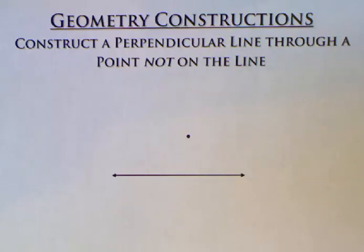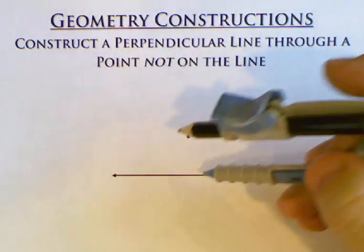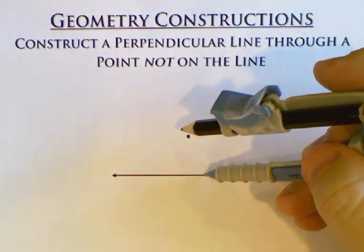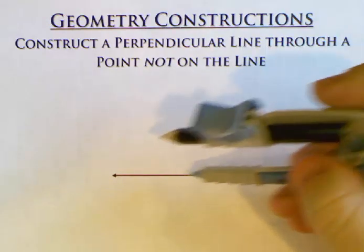This time we're going to construct a perpendicular line that goes through a point that's not on the line. Now when I did the point that was on the line and made it perpendicular through it, I had to make two points that were equidistant from that point.